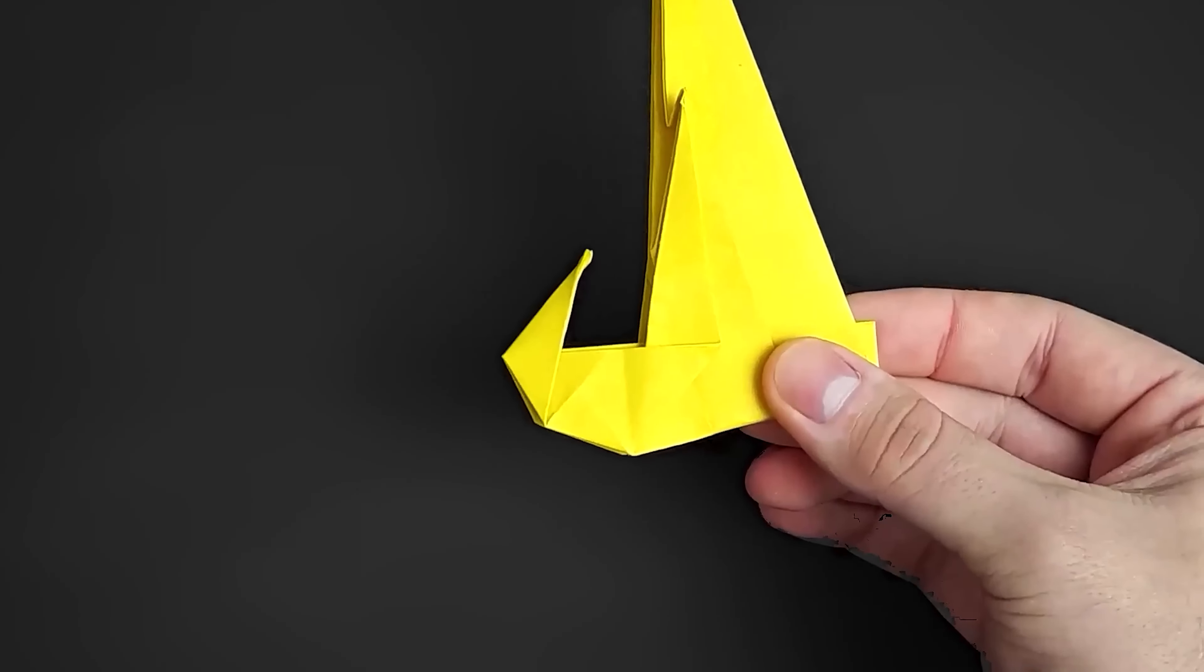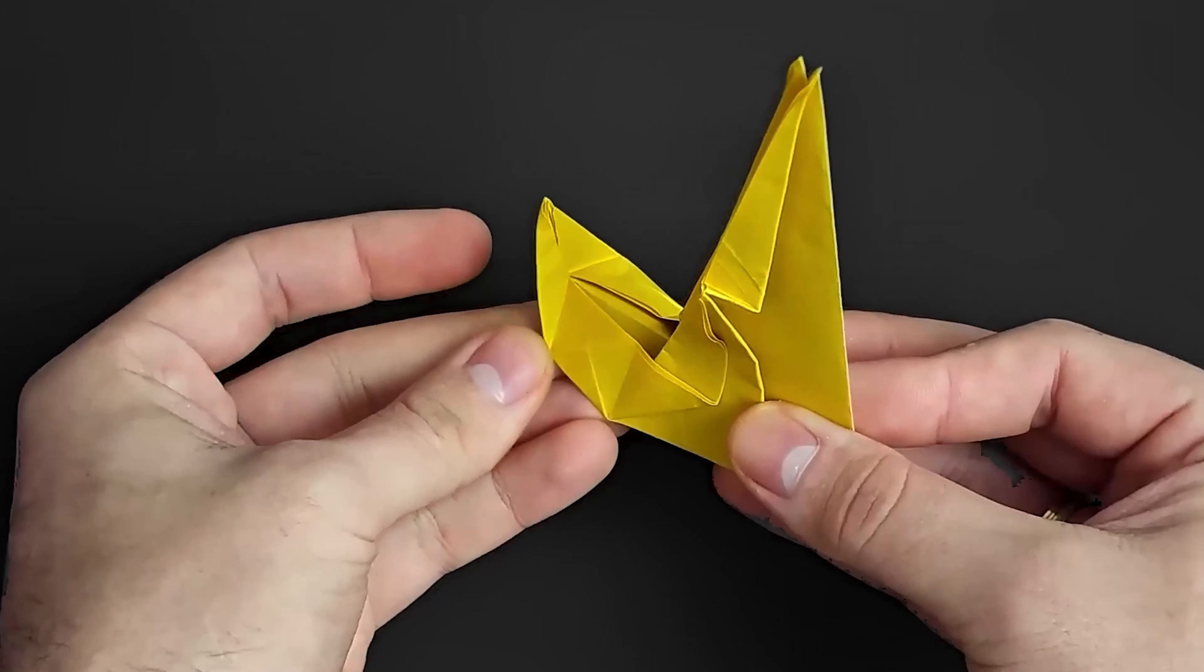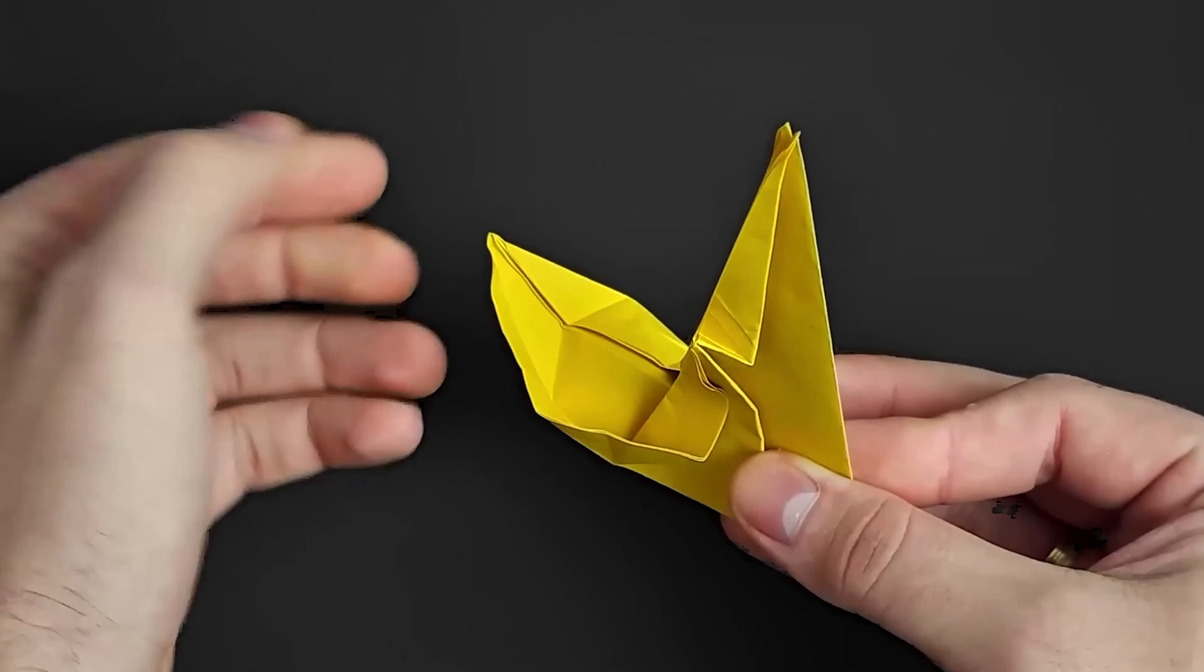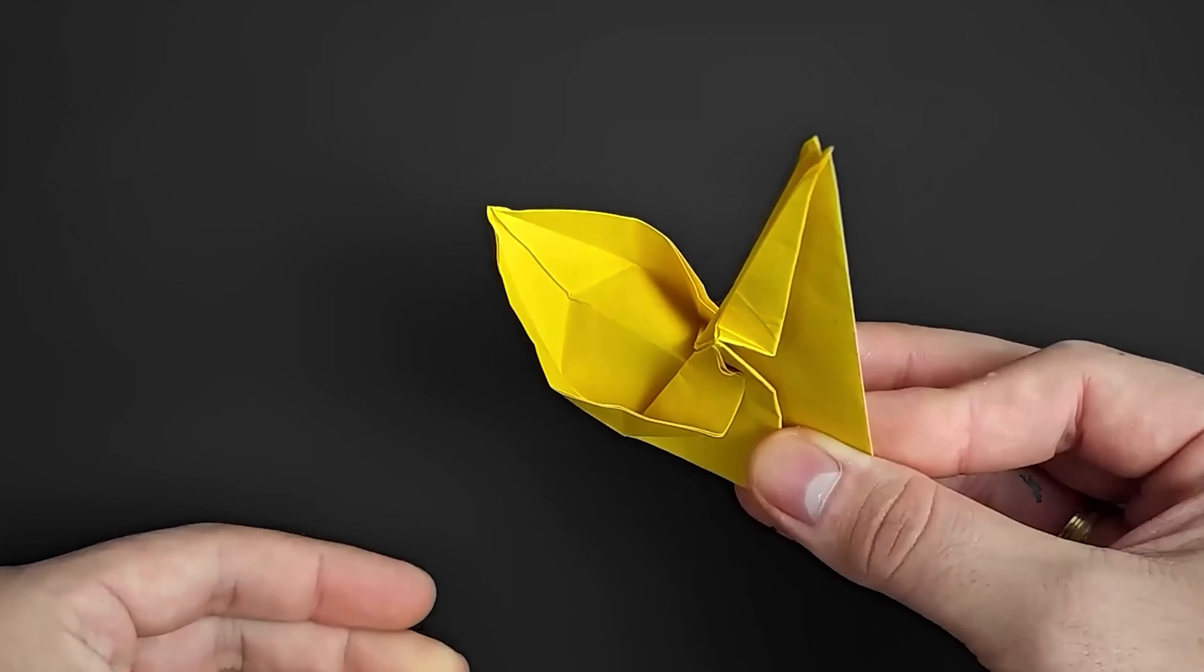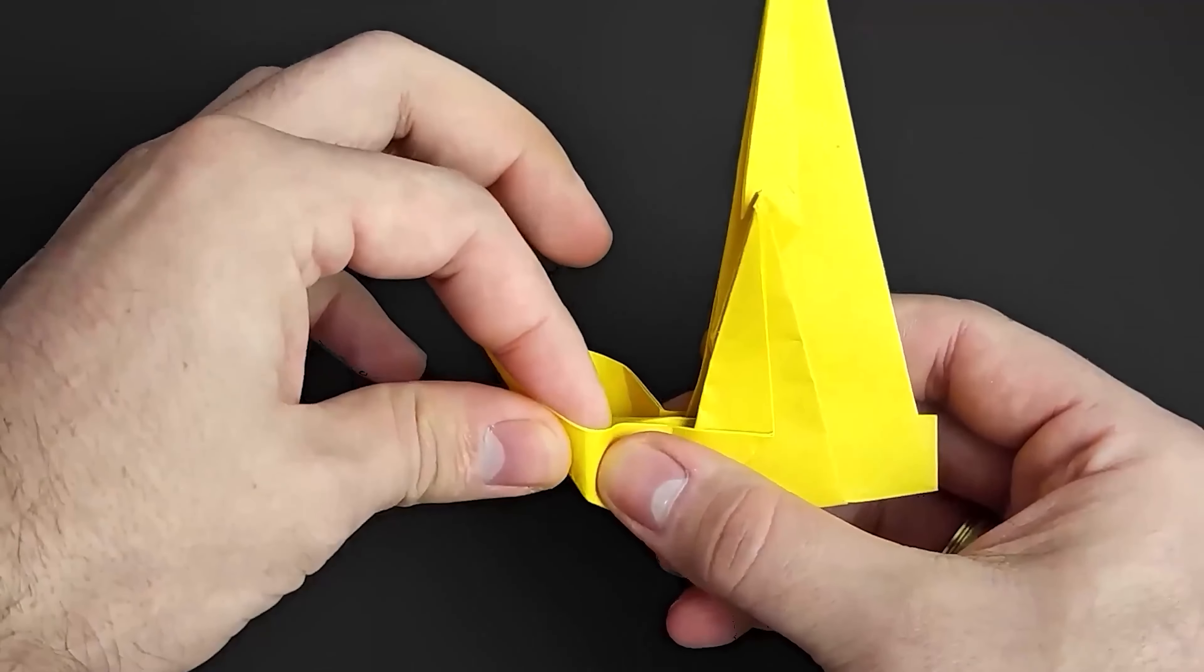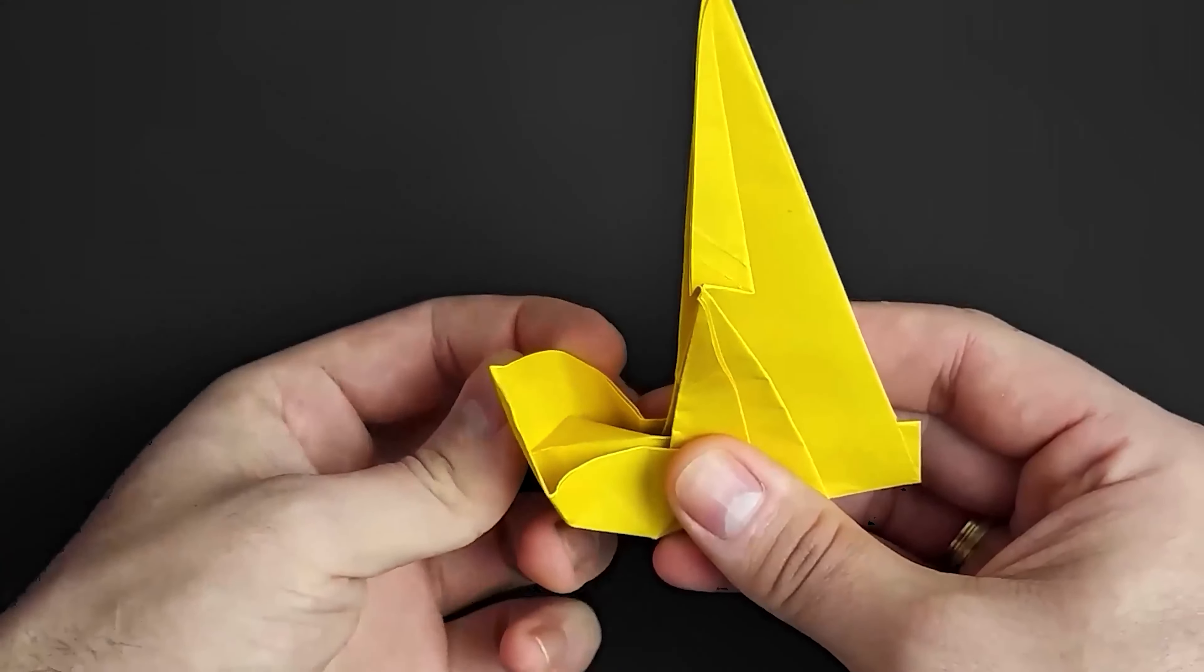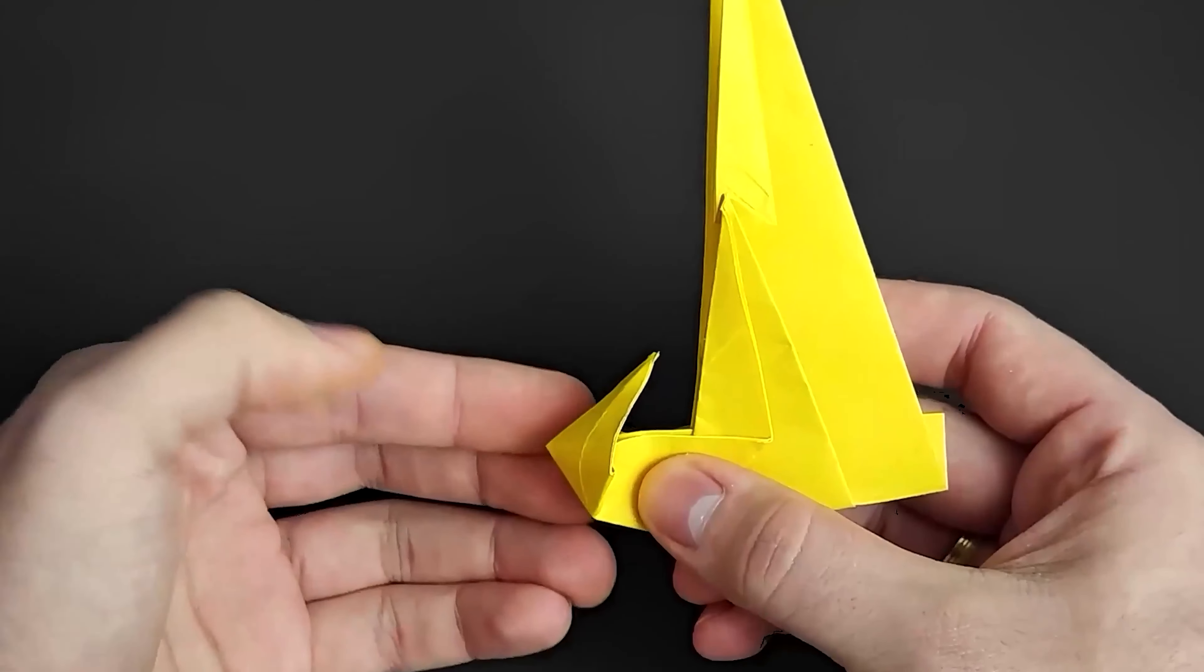Once folded, we unfold this tip again and open the middle layers. Keeping it open, we're going to close the larger part until these small lines here. Then we're going to close the smaller part over the bigger one.